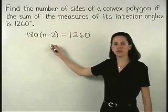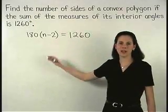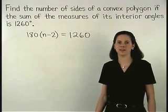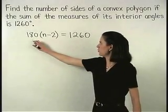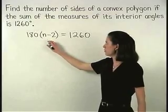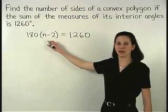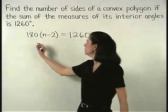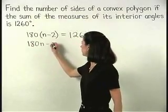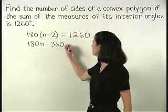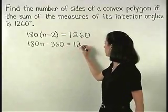So if we solve this equation for n, we'll have our answer. To solve the equation, we start by distributing the 180 through the parentheses on the left side, and we have 180n minus 360 equals 1260.